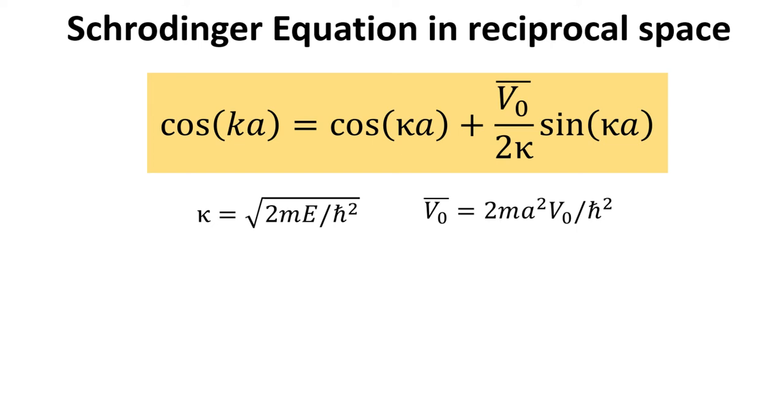First, we separated all terms involving the momentum k to the left-hand side of the equality sign, and all terms involving the normalized energy, kappa, to the right-hand side of the equality sign.